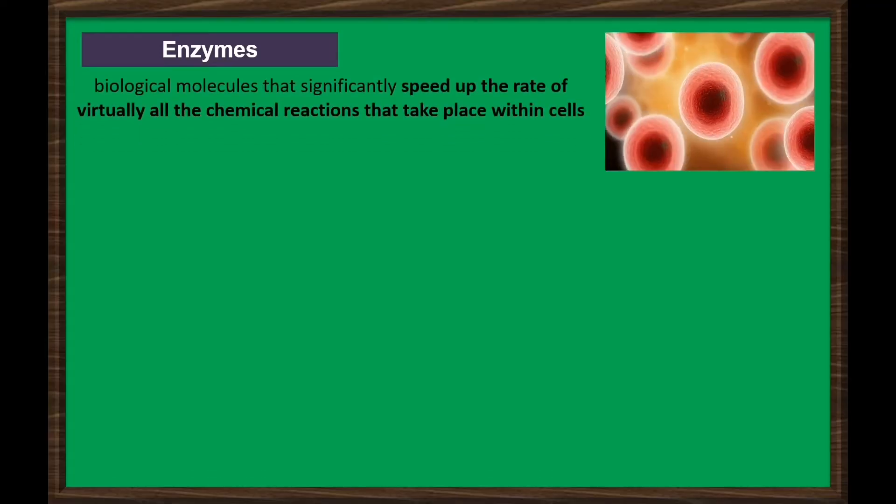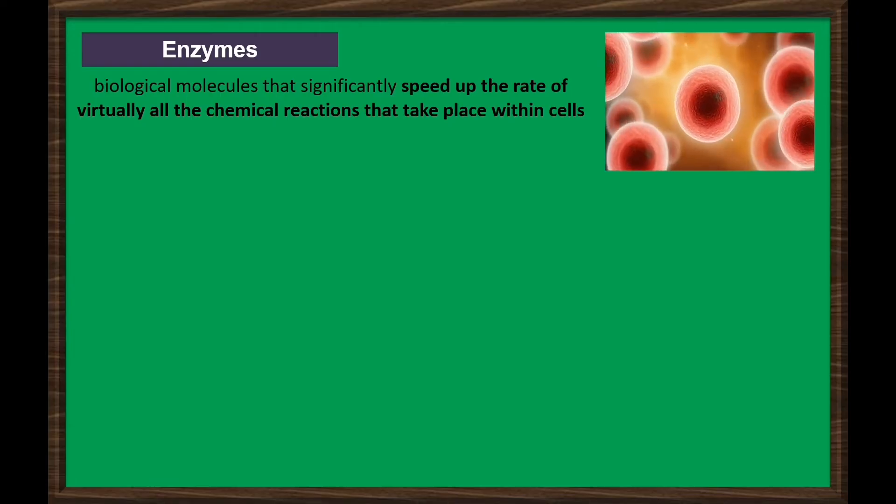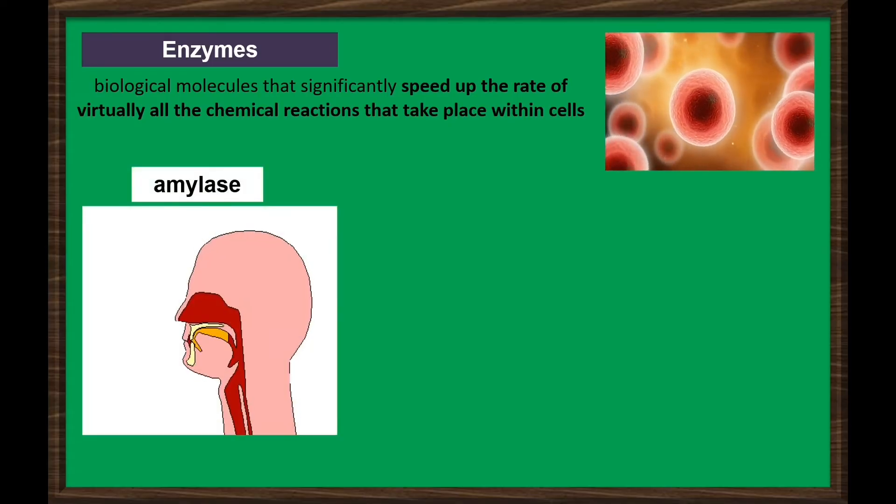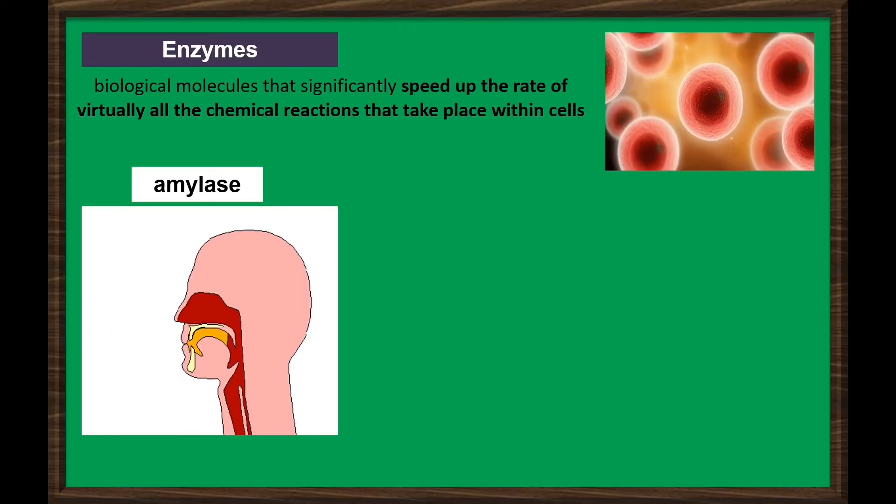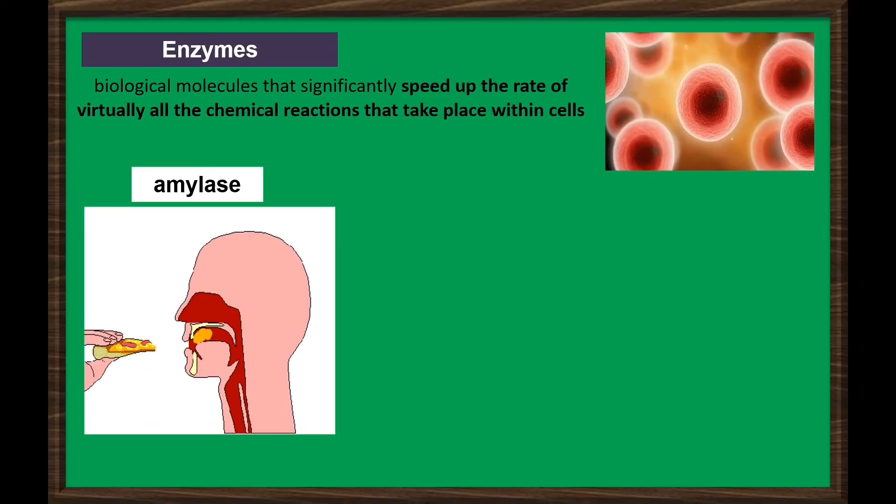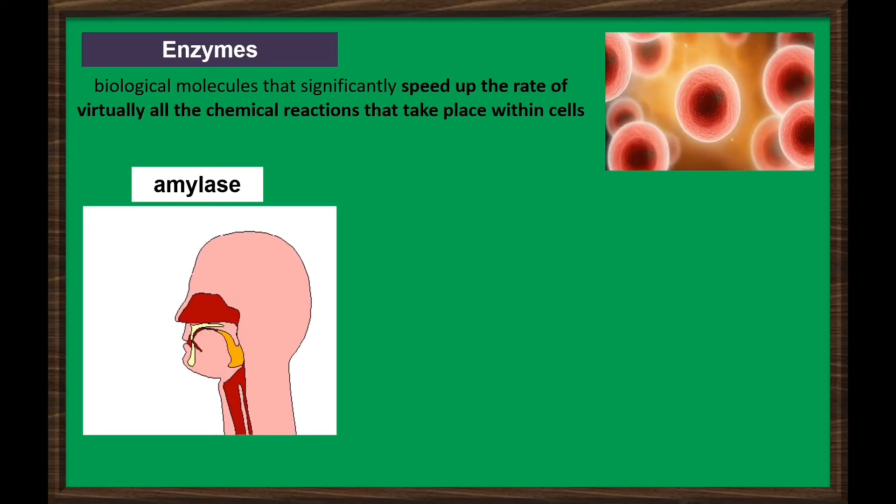Enzymes are typically proteins. These are biological molecules that significantly speed up the rate of virtually all the chemical reactions that take place within cells. Examples are amylase, which is present in the saliva of humans and some other mammals. It catalyzes starch into simple sugars, meaning it speeds up the breakdown of starch into simple form.